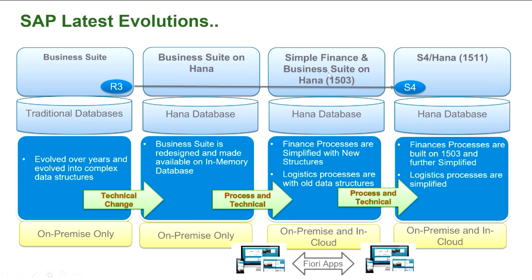From Business Suite to Business Suite on HANA, it was a technical change because table structures were changing — still on-premise but technical changes occurred. From there to Simple Finance, all finance-related tables were simplified — that is both a process change and a technical change. And from there SAP is going further to make the entire business suite, including logistics, also simple. That evolution is ongoing.